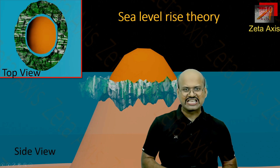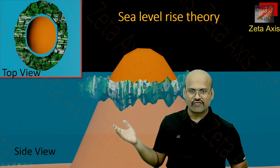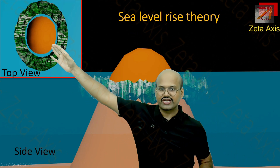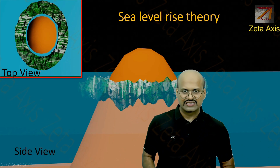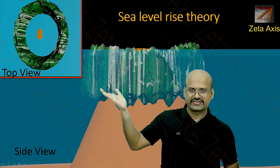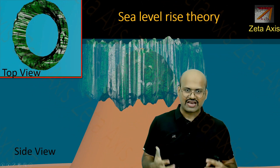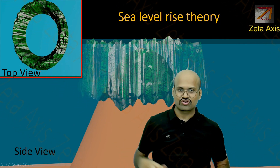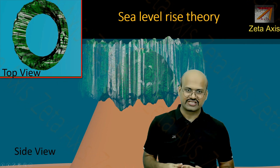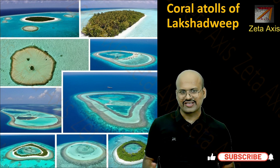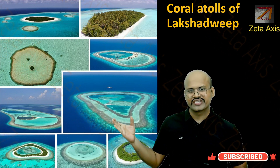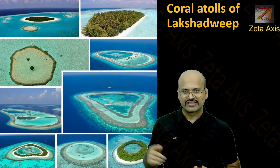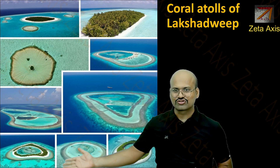The second theory is called the sea level rise theory, and this is the most widely accepted theory. It says that when the volcanic mountain was formed, slowly over time barrier reefs were created around the volcanic mountain, forming a ring-like structure. Over time the sea level started to rise, and as the sea level rose, the corals also started to grow upward to stay alive. However the mountain top went below the sea surface, and because of this we had a ring of coral reefs called an Atoll. If we look at images of the Lakshadweep Islands, most of these islands are atoll reefs first created around volcanic islands. Over time the volcanic islands went below sea level, and therefore only the atolls are now visible.